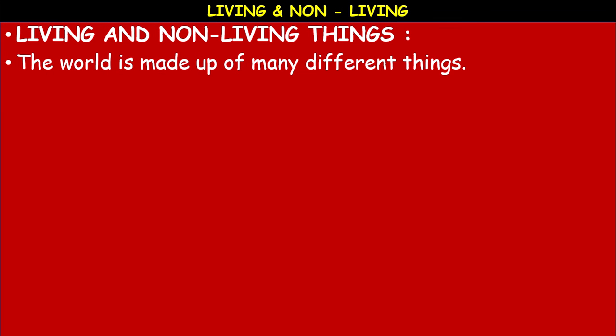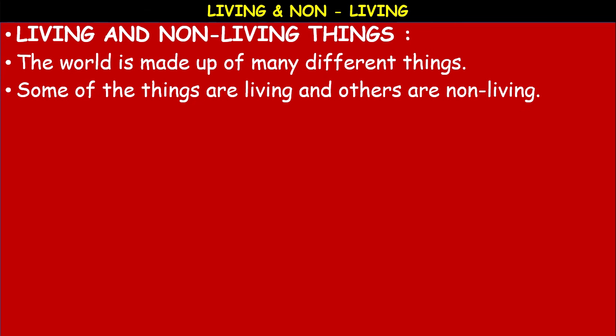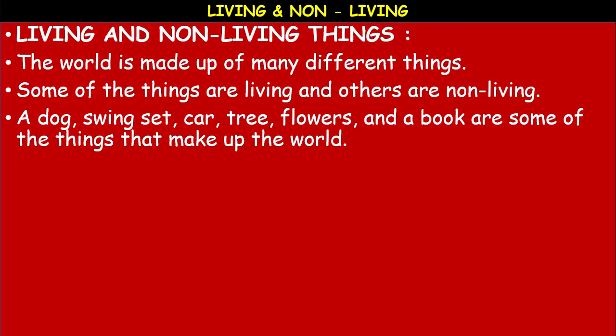Now, coming back to living and non-living things. This world is made up of many different things — some are living and others are non-living. For example, a dog, a car, a tree, flowers, and a book. These are some of the things that make up the world, and we can differentiate them. A dog is a living thing; a car and a book are non-living things.